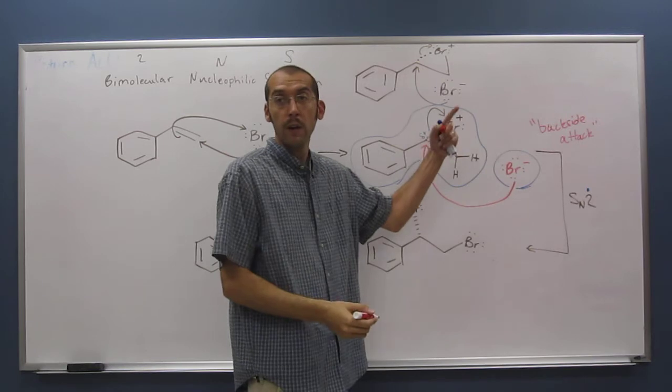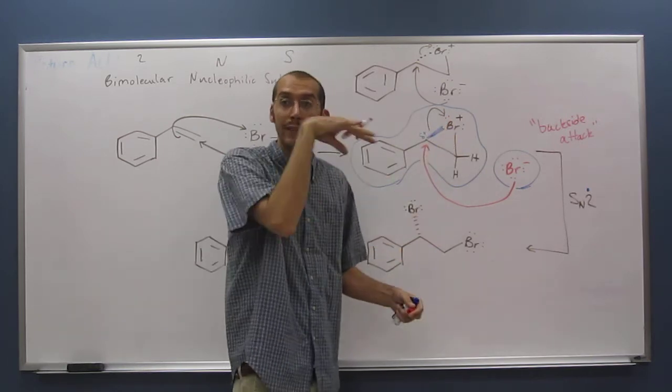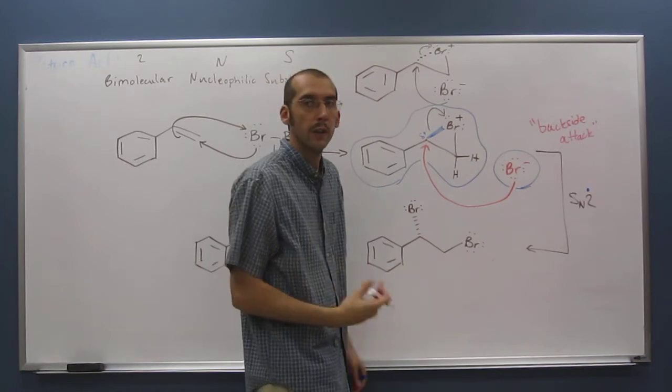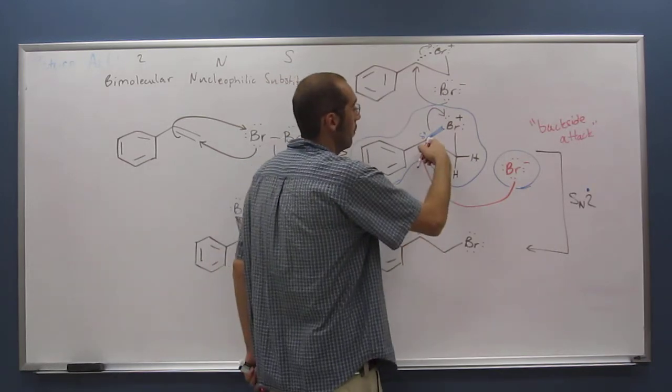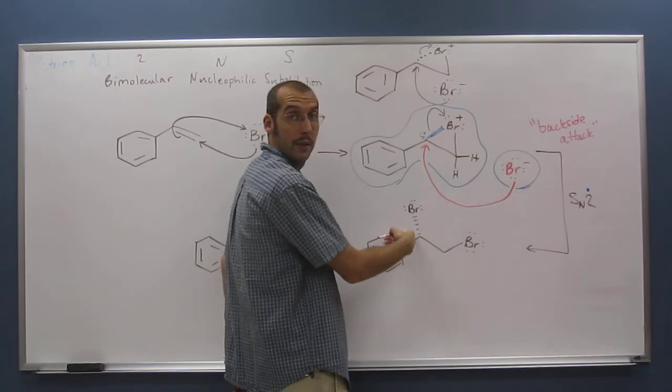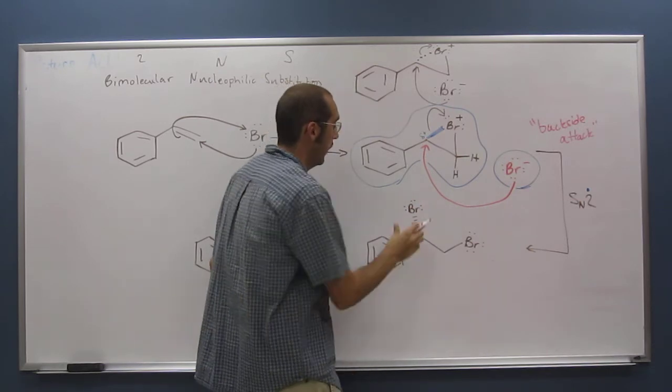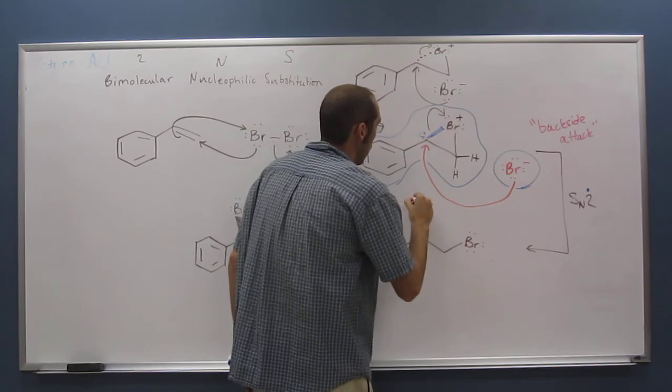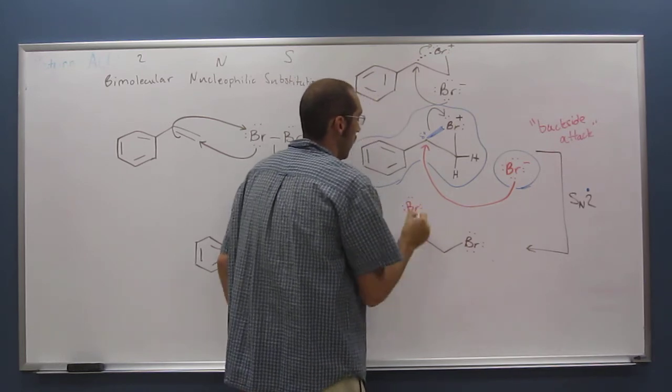If this is pointing forward, it's got to come from the backside, because that's where the antibonding orbital is. It's going to attack from the opposite side. So that's why it's pointed back.